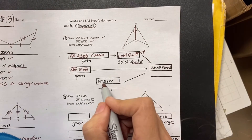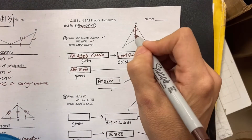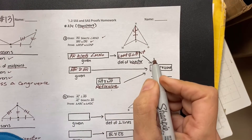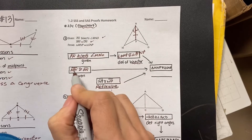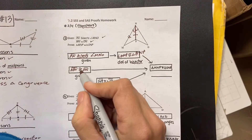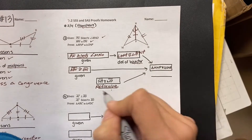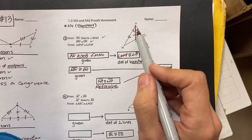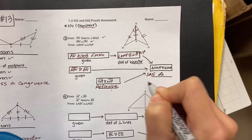Now NP is congruent to NP — that's called reflexive. And they filled in the given statement: side MN is congruent to ON. Now our evidence spells side, angle, side — side, angle, side triangle congruence.